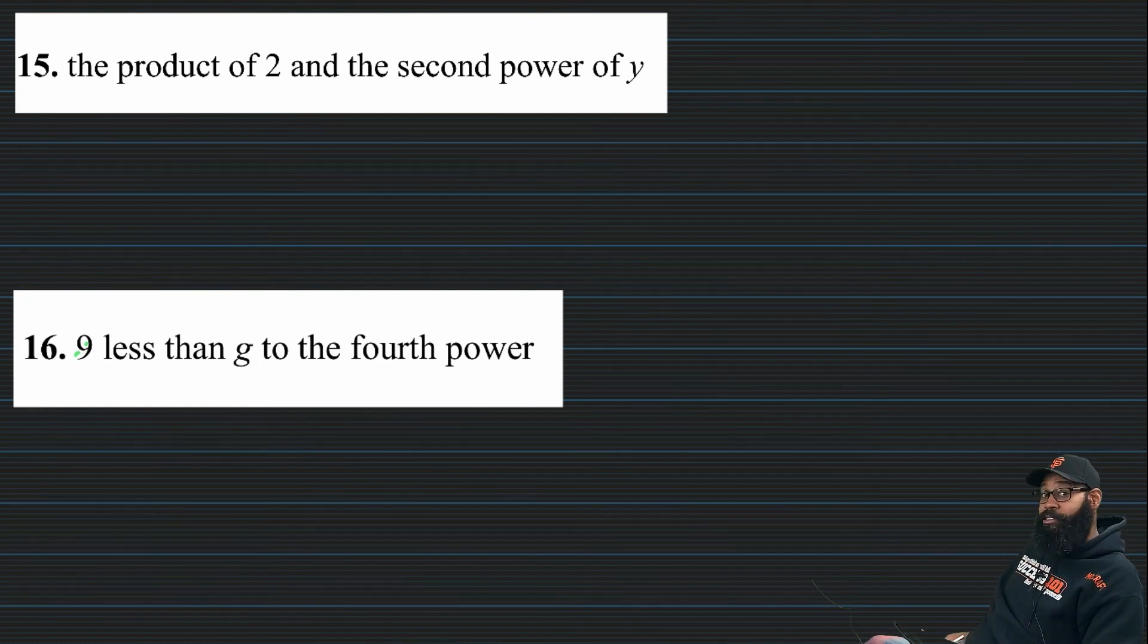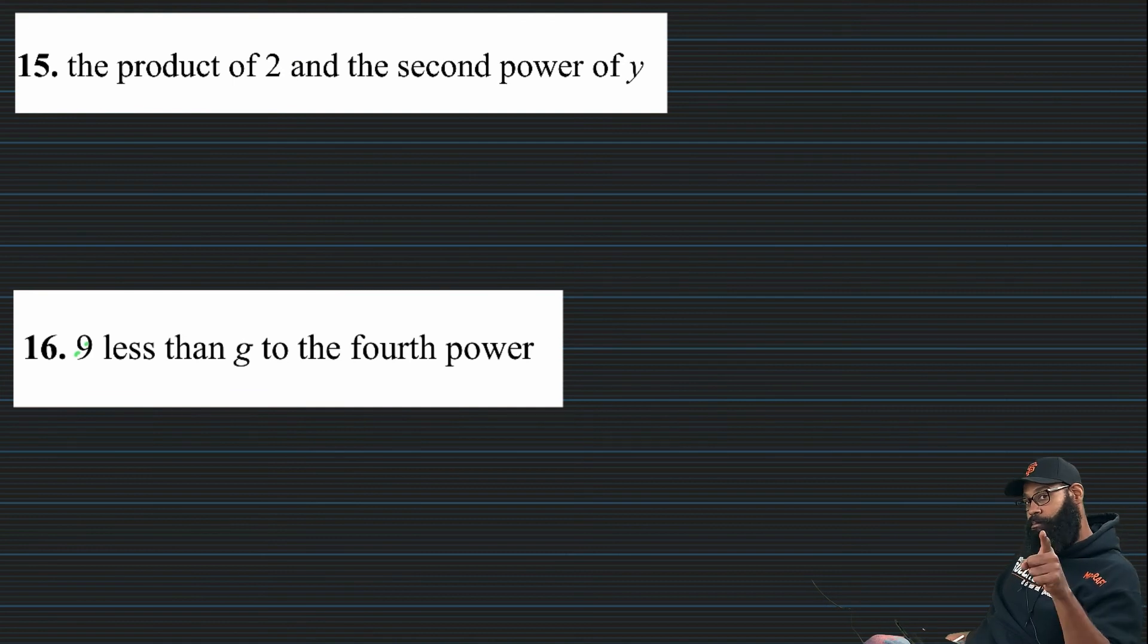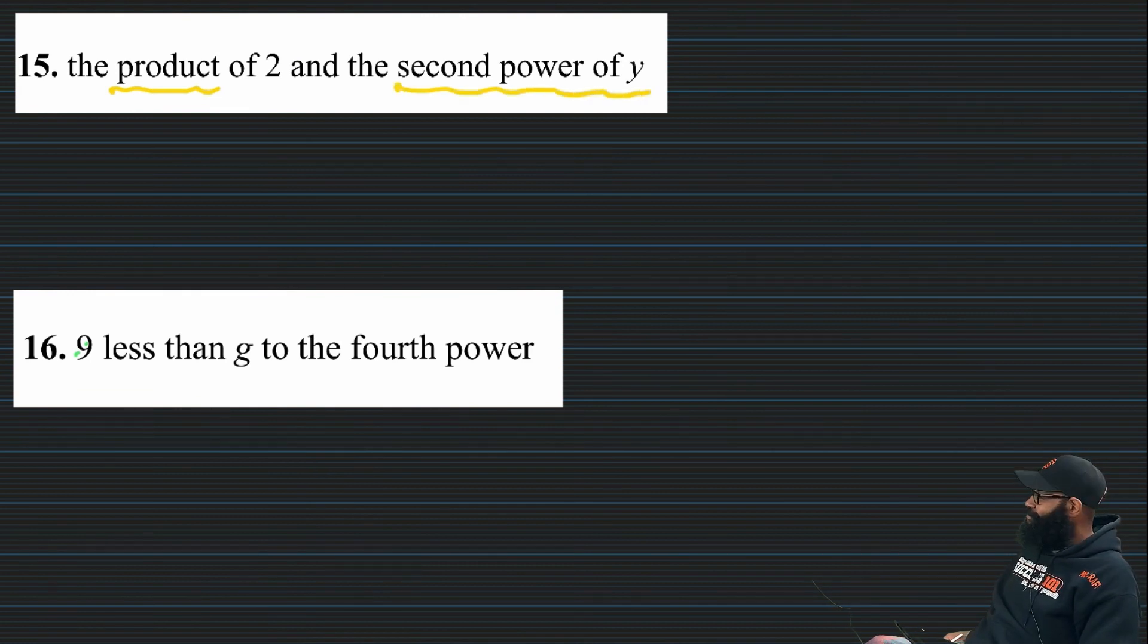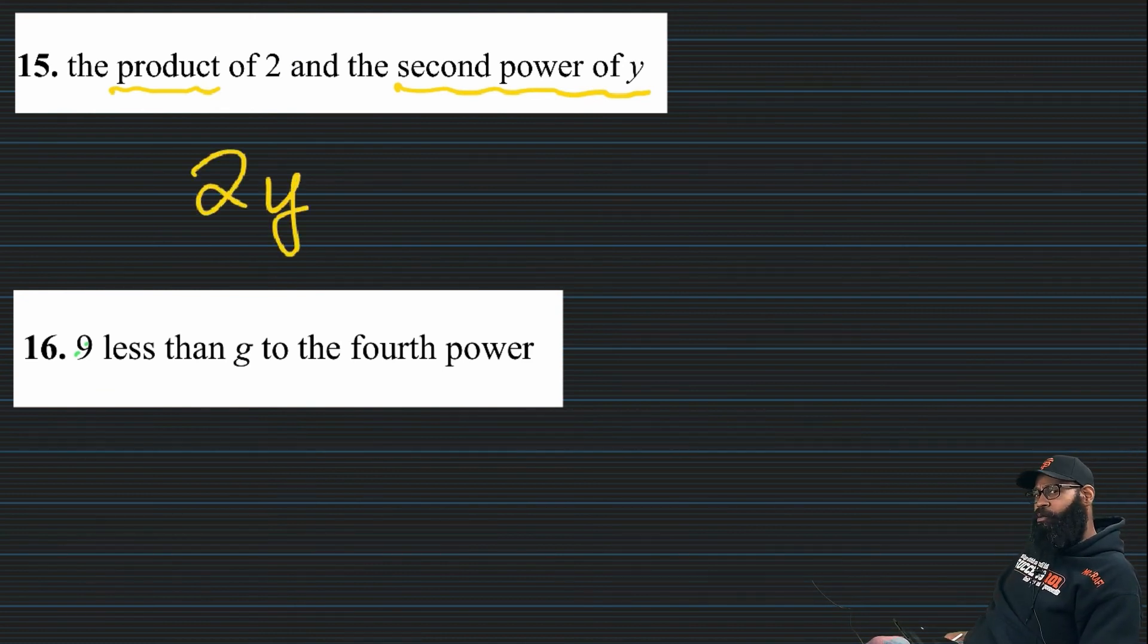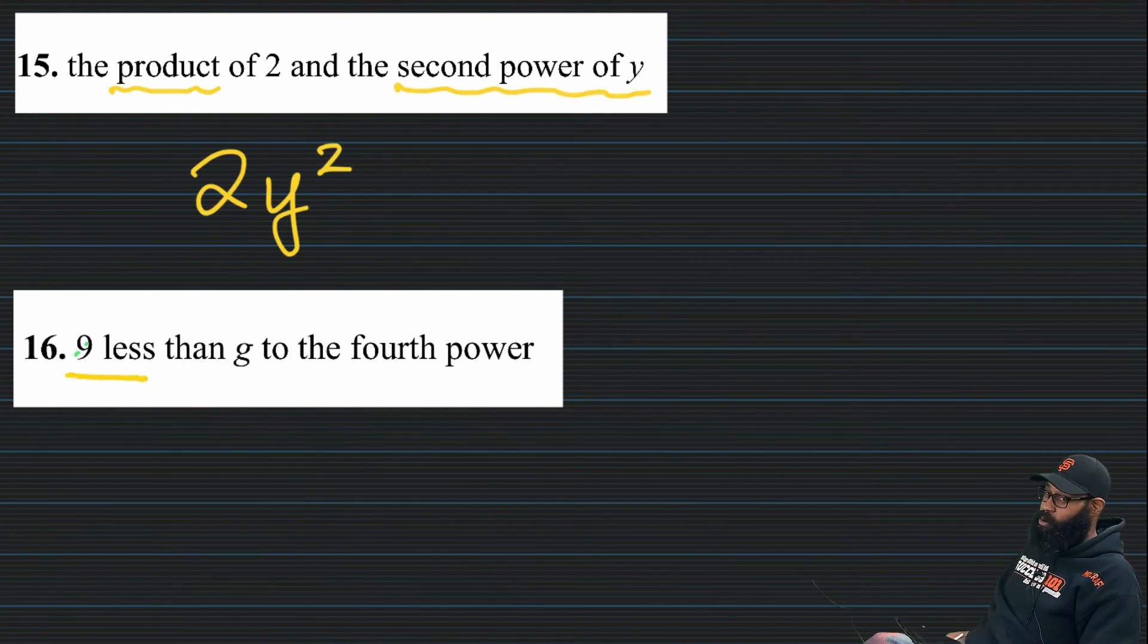Call it out. You see any operations in there? Got it. I see the word product. I'm sorry. Fifteen. The product of two and the second power of y. Product. Multiplication. Second power of y. Could have called it y squared. Because I sure wrote it as y squared. So two times y squared, or just two y squared.